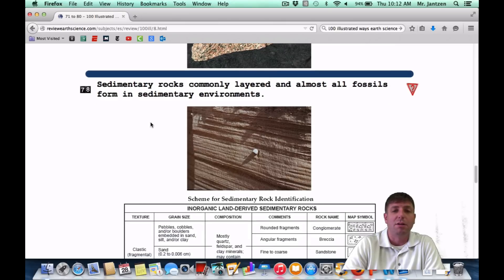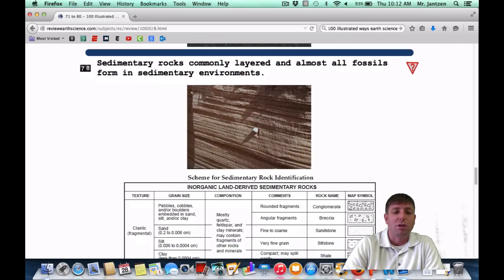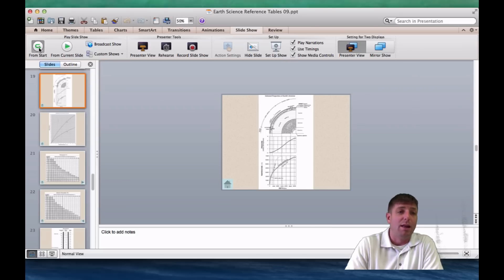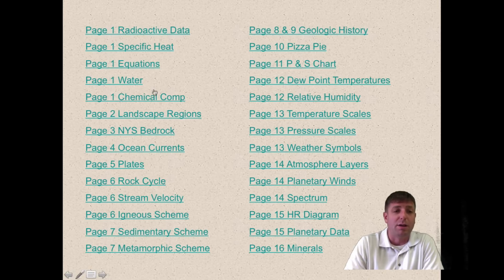Number 78, sedimentary rocks commonly layered, and almost all fossils form in sedimentary environments. Here's a little picture of your reference tables right here. Layering is what you want to associate with sedimentary rocks, nice, even layers. Once again, that's showing the compaction and the compression or cementation when sedimentary rocks form. So you want to understand how sedimentary rocks form. You don't have to memorize that. Once again, that's going to be in your reference tables.